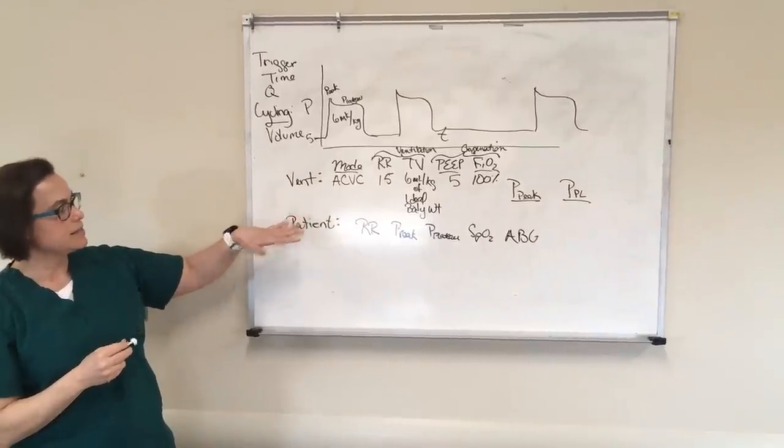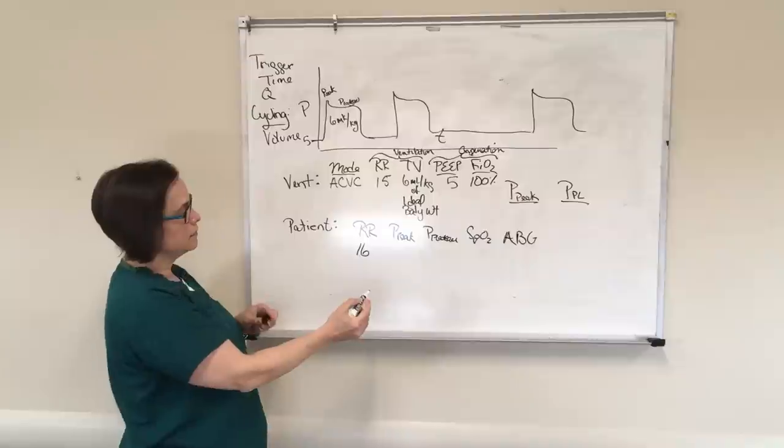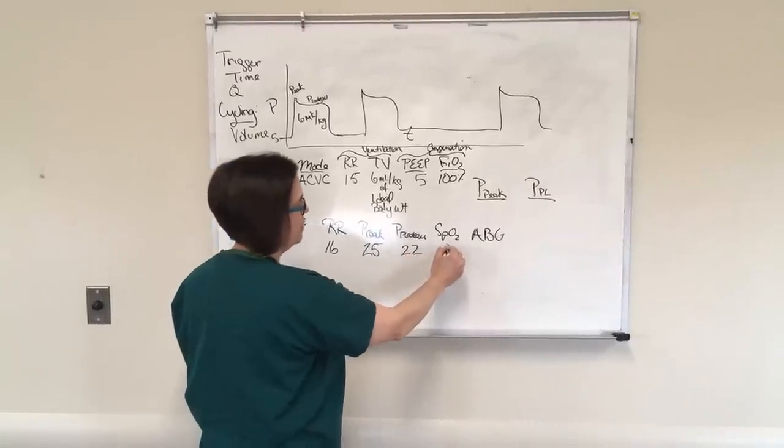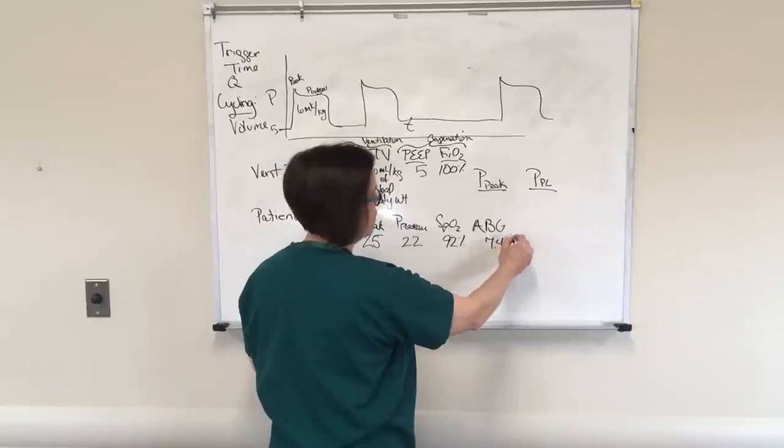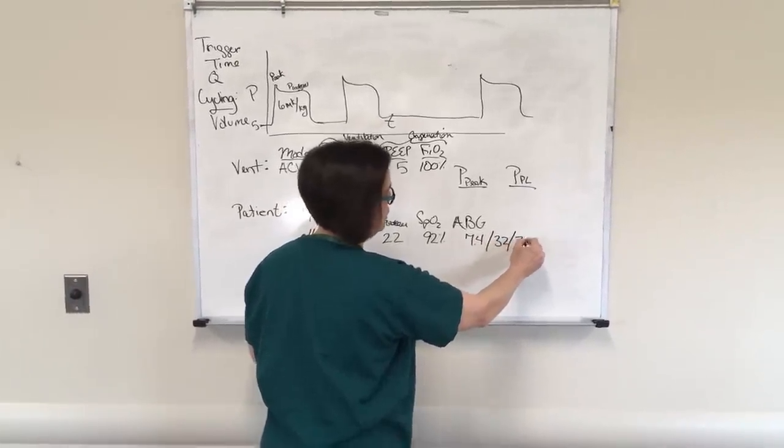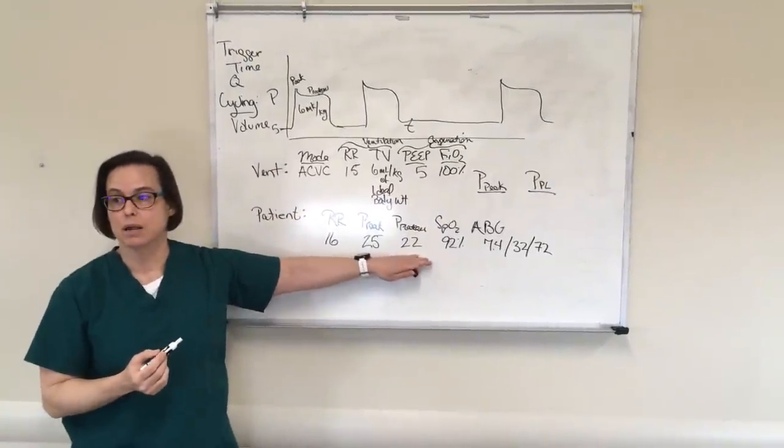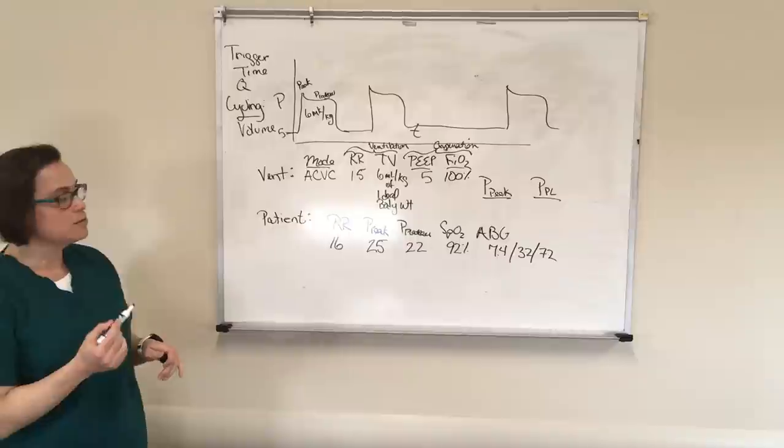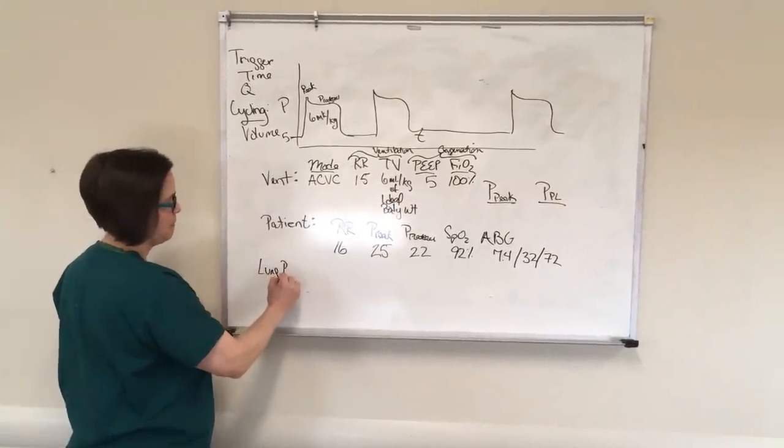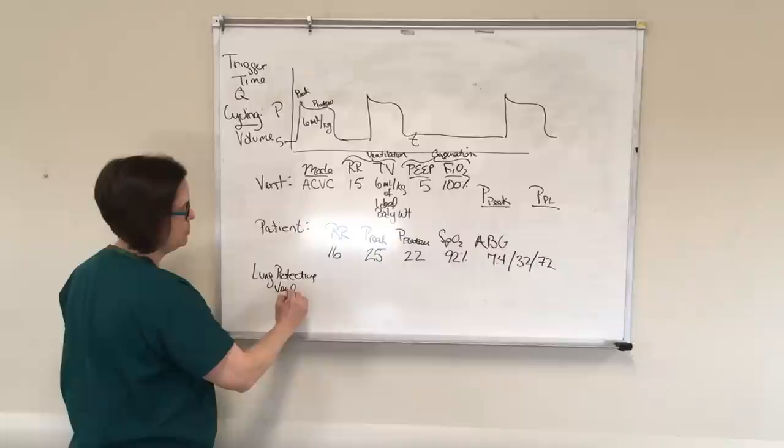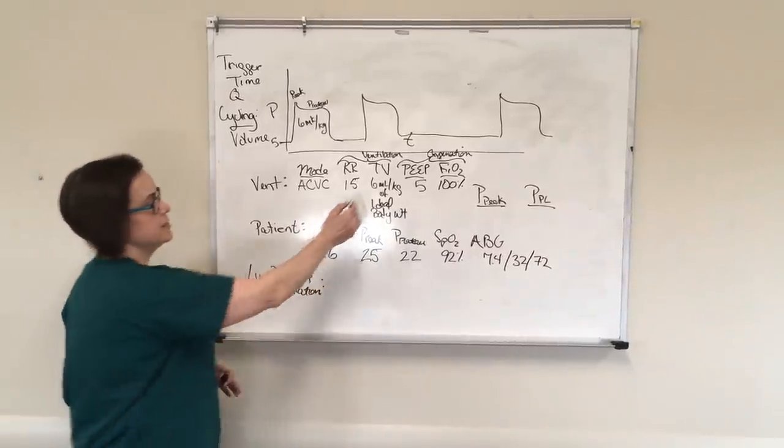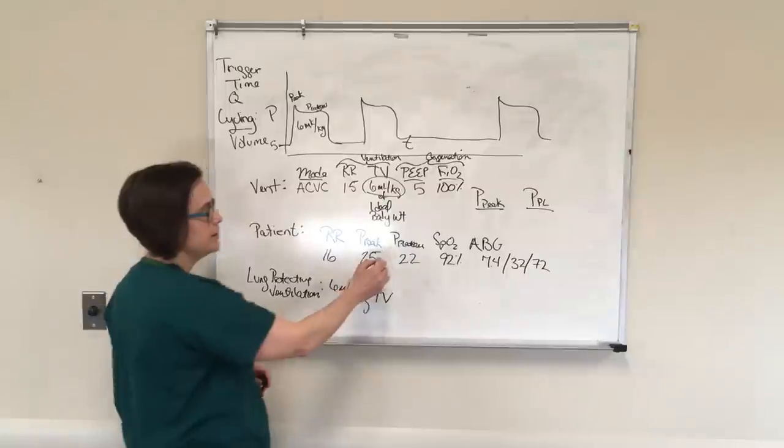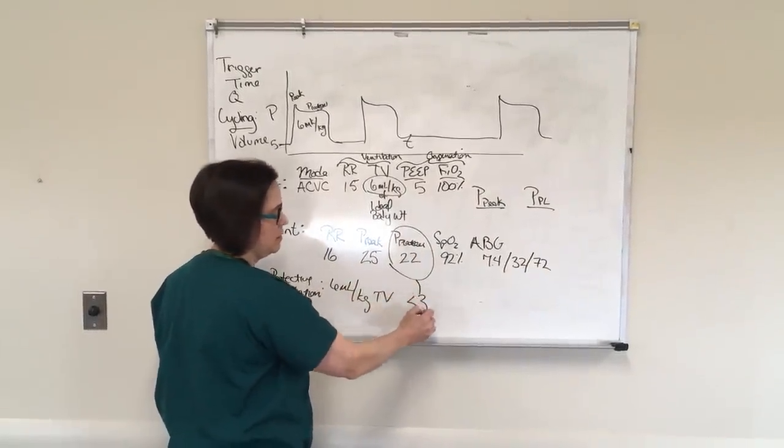So let's say on this that the patient has a respiratory rate of 16 and a peak pressure of 25 and a plateau pressure of 22 at a SAT of 92% and an ABG of 7.4, 32, 72, right? These are the numbers that are going to help us, and we'll talk about what those mean in just a second. All right. So let's address this peak and plateau pressure here issue. The key things that you need to know about lung protective ventilation are really two things. One is this. That's six milliliters per kilogram for your tidal volume is one part of that. And the other part of that is we never want our plateau pressure to be greater than 30.